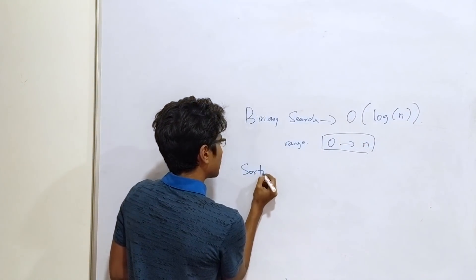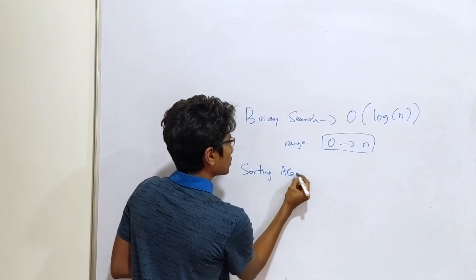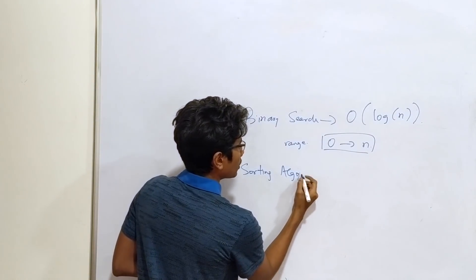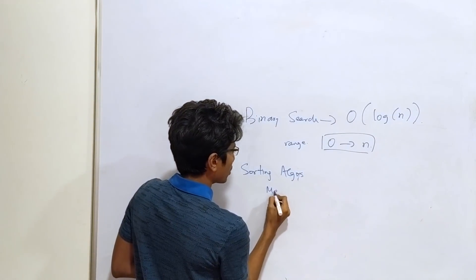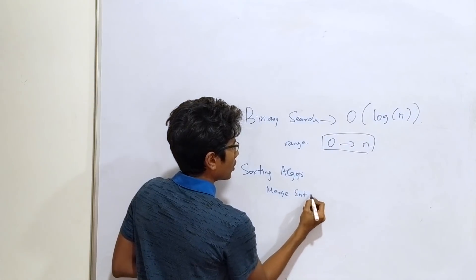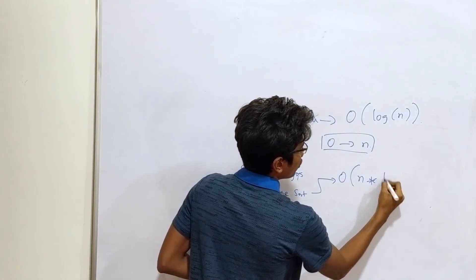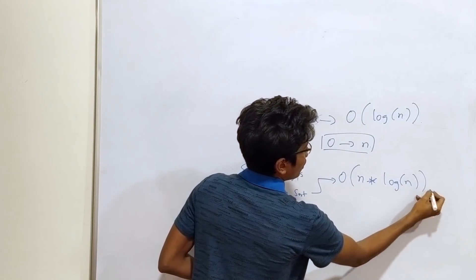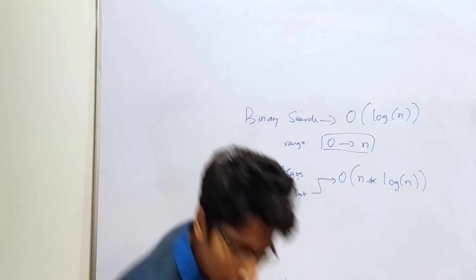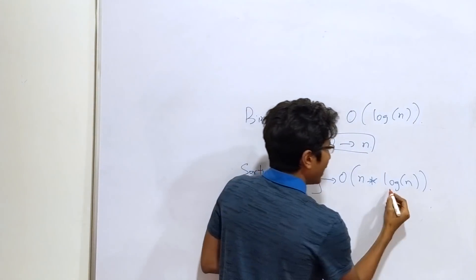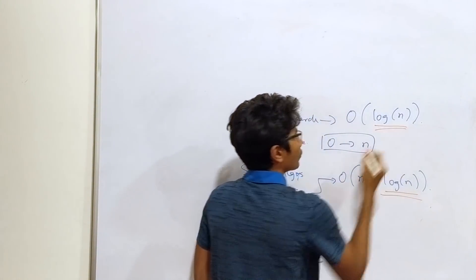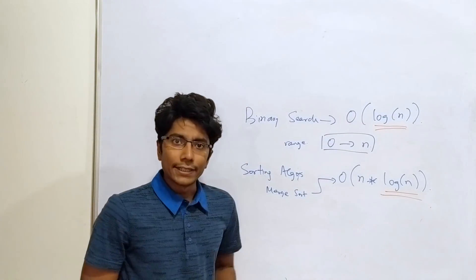The next thing is sorting algorithms, for example merge sort. The time complexity for this is order n into log n. Again, interestingly, a wild log n appears. Why is this?